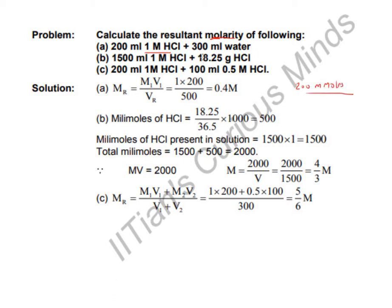The volume in ml will be 200 + 300, because 200 ml is the HCl aqueous solution and 300 ml is water, so the resultant volume is 500 ml. The molarity becomes 200/500 = 0.4 molar. The concentration of HCl reduces from 1 molar to 0.4 molar.